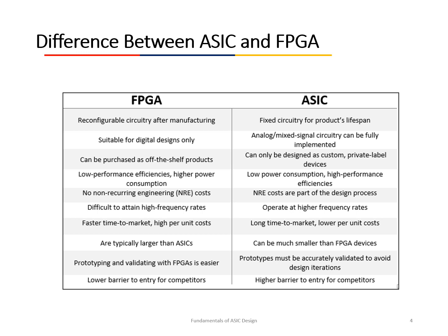Further differences: FPGA has no non-recurring engineering (NRE) cost, whereas for ASICs, NRE costs are part of the design process. FPGAs find it difficult to attain high frequency rates, while ASICs can operate at high frequency rates. FPGAs have faster time to market but higher per-unit cost; ASICs have longer time to market but lower per-unit cost. FPGAs are typically larger than ASICs, which can be much smaller. Prototyping and validation is easier with FPGA, while ASIC prototyping is more difficult. Finally, FPGA presents a lower barrier to entry for competitors, while ASIC presents a higher barrier to entry.